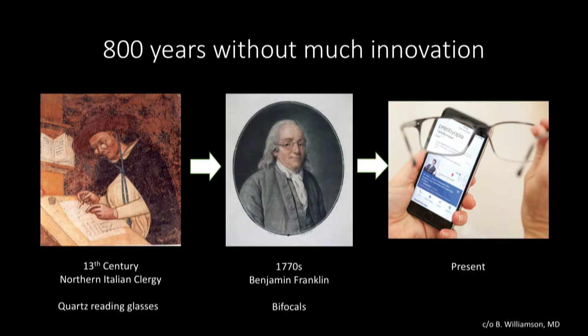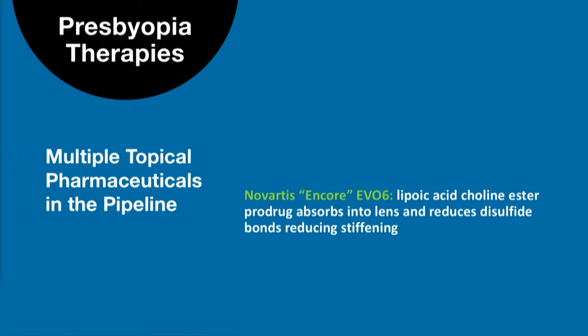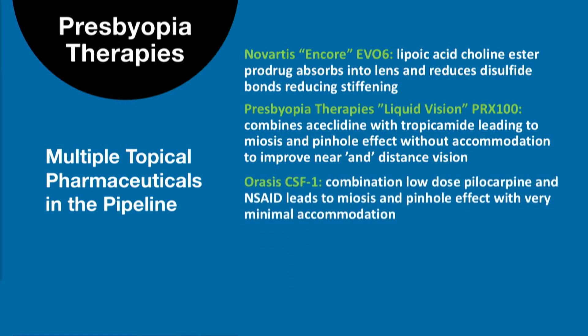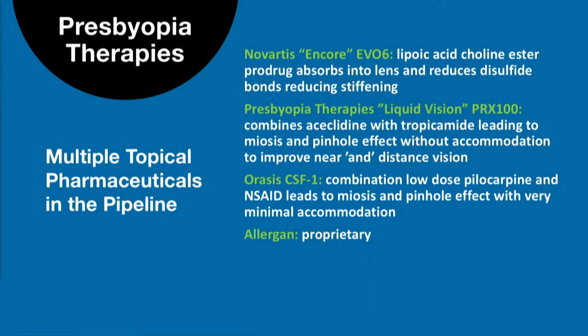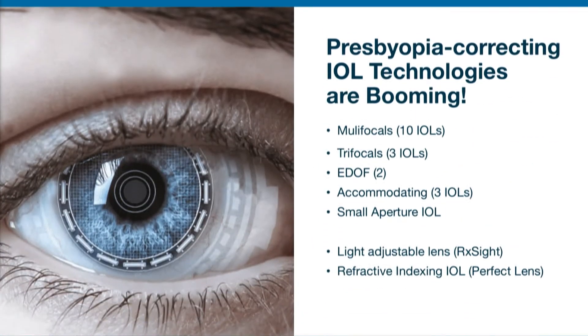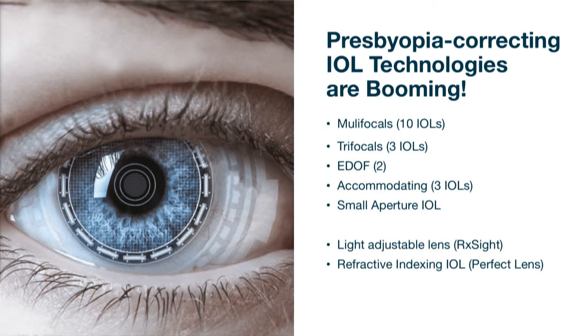Let's discuss what topical options are in the pipeline. Among the four different companies working on it: Novartis with EVO6 is actually trying to prevent the stiffening of the lens; Liquid Vision, Presbyopia Therapies, and Orasis, as well as Allergan, are focusing on pupillary miosis to help with pseudo-accommodation. Some of these companies also have a secondary agent to mitigate accommodative spasm — whether tropicamide or an NSAID — used alongside the primary agent.